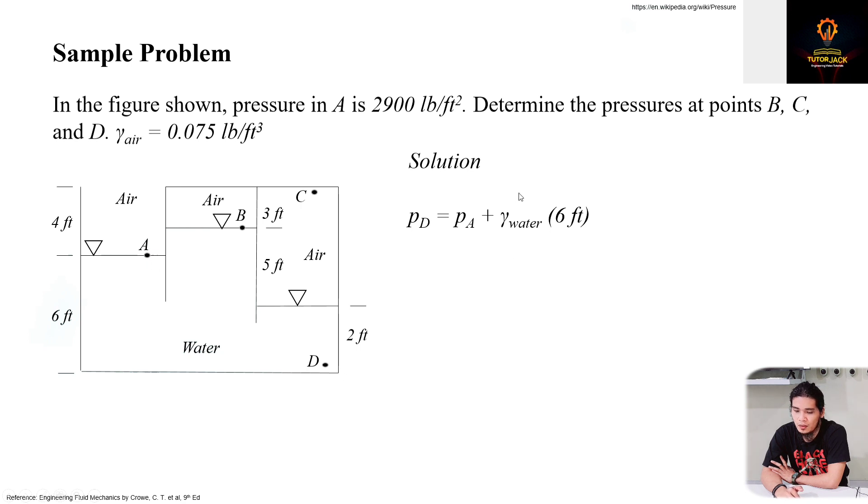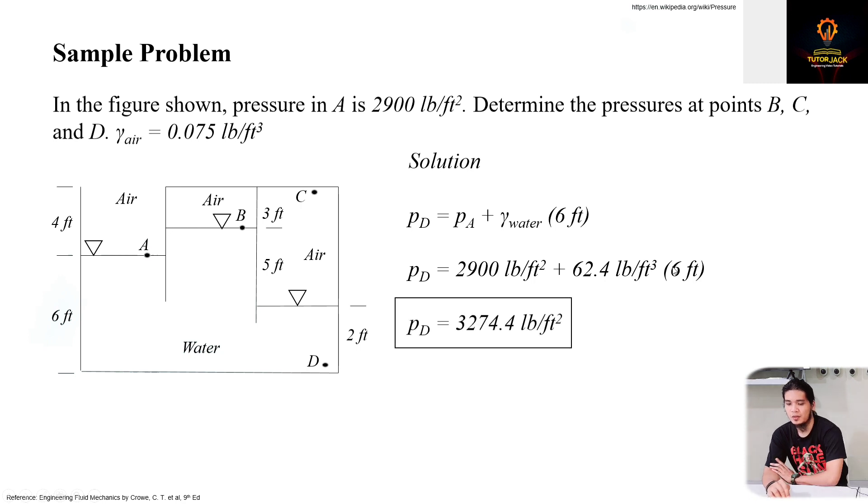And then the fluid is water. So unit weight of water times the change in elevation or difference in elevation. So that's 6 feet difference in elevation. You will have 2,900 plus 62.4 times 6. You will have pressure D equals 3,274.4 pounds per square foot.